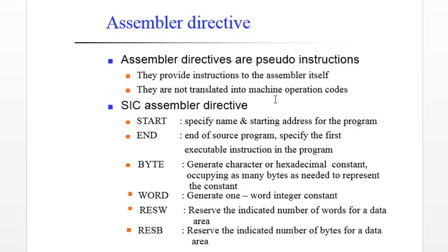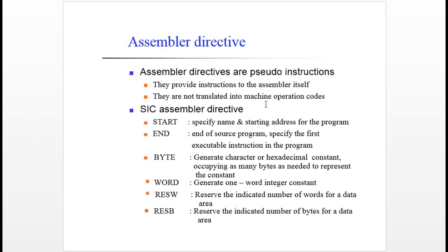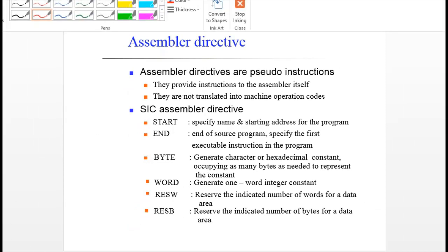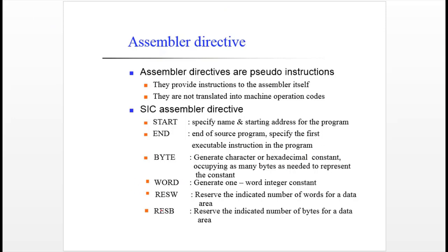Along with the END directive, BYTE, WORD, RESWORD, and RESBYTE — these four assembler directives have already been discussed in our earlier videos while explaining SIC programming examples. To summarize: BYTE can be used to generate a character or hexadecimal constant, occupying as many bytes as needed to represent the constant. To generate character constants, you use a variable name followed by the assembler directive BYTE, then C, and within single quotation marks you write the constant value.